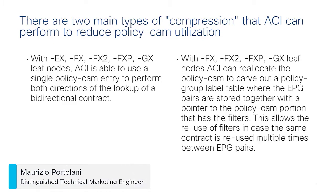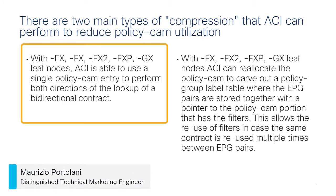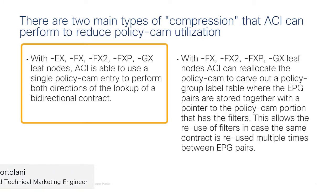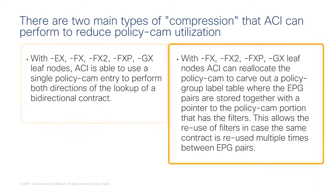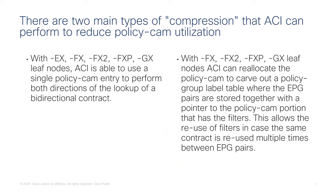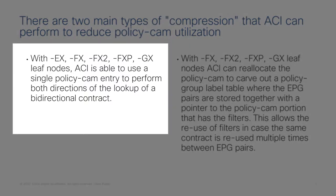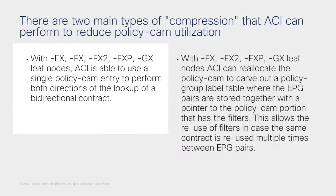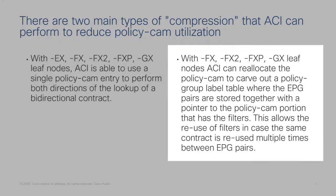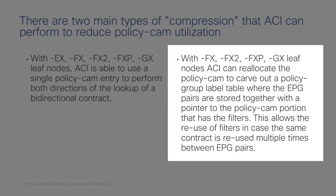There are two main optimizations. One is called bidirectional contract compression and the other is the ability to reuse the same filters when the same contract is reused. The first feature became available earlier on EX leaves and is available on FX, FX2, FXP, and GX. The second feature requires FX leaves or newer for it to work.